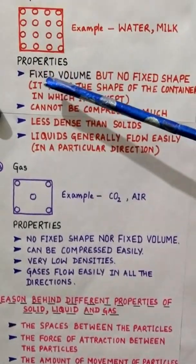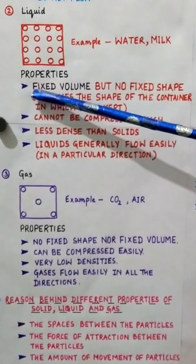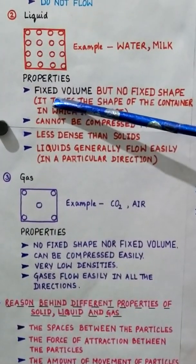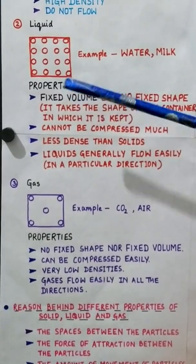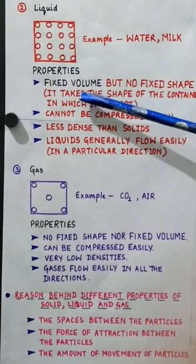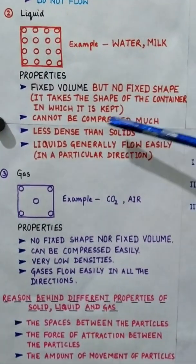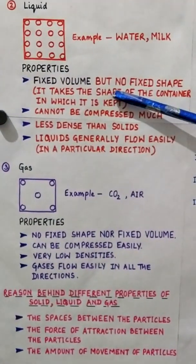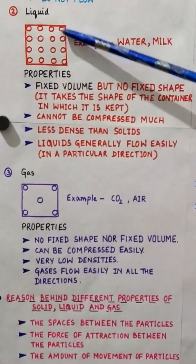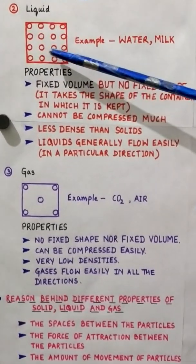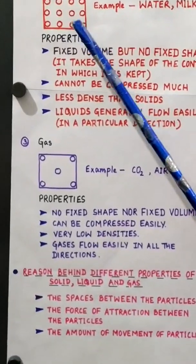The first property of liquid is that it has a fixed volume. At a given temperature, the inter-particle space is always fixed and so the volume of a liquid is fixed. But liquids do not have a fixed shape. Since the force of attraction between the particles is a little less, liquids take the shape of the container in which they are kept.